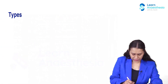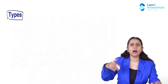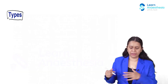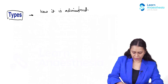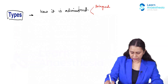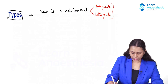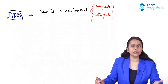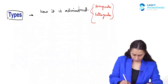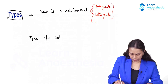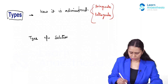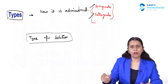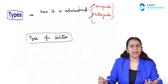Now let us talk about the types of cardioplegia. Cardioplegia is divided based on how we administer it — antegrade and retrograde. Another way to divide cardioplegia is by the type of solution used: single administration solution, multiple dosing solution, blood-containing solution, or crystalloid-containing solution. So let us first discuss the division based on how it is administered — antegrade and retrograde.